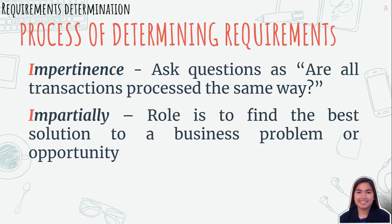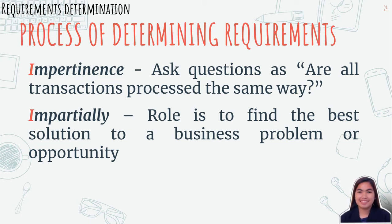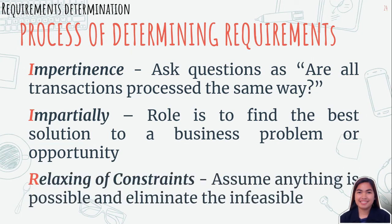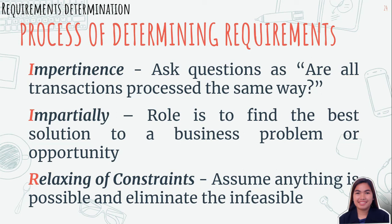Next is impartiality — your role is to find the best solution to a business problem or opportunity, not to justify the purchase of new hardware or insist on incorporating what users think they want. Third is relaxing of constraints — assume anything is possible and eliminate the invisible. For example, do not accept the statement 'We've always done it that way, so we have to continue the practice.'